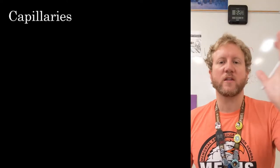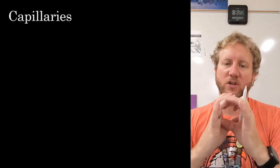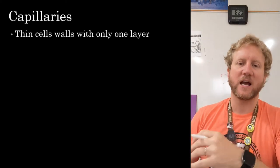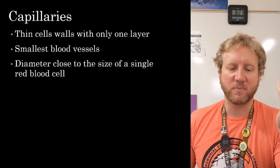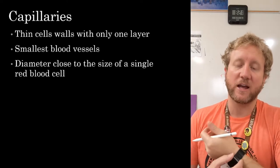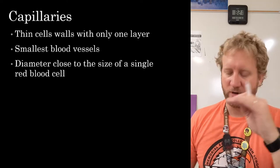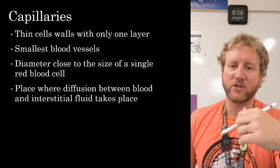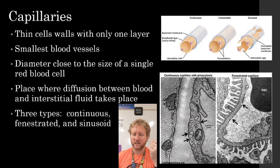Going from the heart outward, we've gone from elastic arteries to muscular arteries to arterioles. Now we get to capillaries. These are very tiny blood vessels with walls only one cell layer thick — the smallest blood vessels. The diameter is very close to the size of a single red blood cell; in some cases the diameter is actually smaller than the red blood cell. This is where diffusion between the blood and the interstitial fluids takes place. There are three types of capillaries: continuous, fenestrated, and sinusoid.